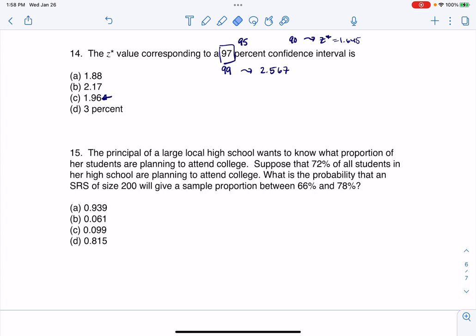If we know the Z star value for 95% is 1.96 and the 99% one is up at 2.5, our answer has to be somewhere in the middle, meaning I can rule out D, 3% is too high.